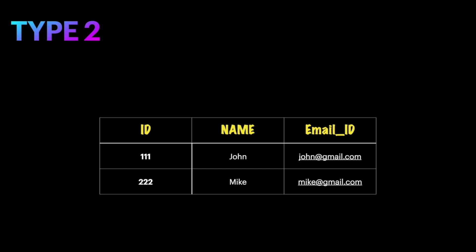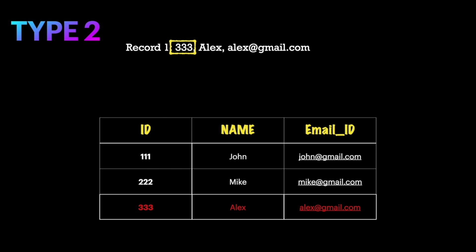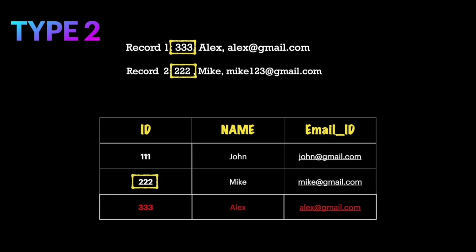Now let's see the functionality of Type 2 using the same example. Similar to Type 1, Type 2 first checks if the same id exists in the table. If id 333 doesn't exist, it inserts the new record just like Type 1. In the second scenario, id 222 already exists in the table, so Type 2 also checks if there are any changes in any of the columns for that matching record. The name Mike hasn't changed, but the email id has changed to mike123@gmail.com.